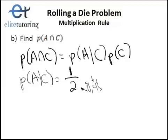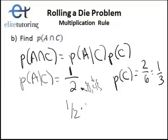So the probability of A given C is simply one half. We also had that individual probability that we had already solved for, the probability of C, which was two out of six or one out of three, right? Because the one and four out of all the possible ones. So now we just multiply those two numbers together. So we have one half times one third gives us one sixth.